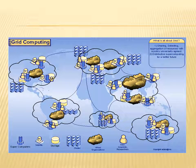This is a picture diagram of a grid computing environment. You can see the various resources, storage, the systems available, the cluster of systems available, the users and their connectivity. This sharing and aggregation of resources is collectively called grid computing.